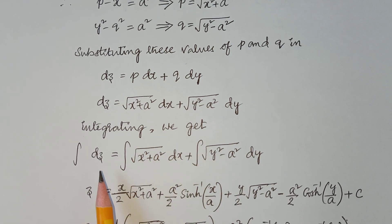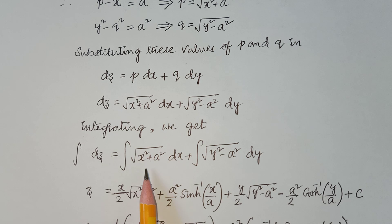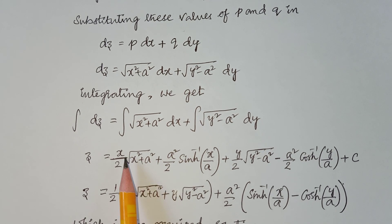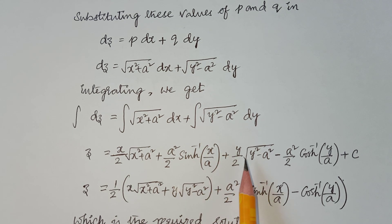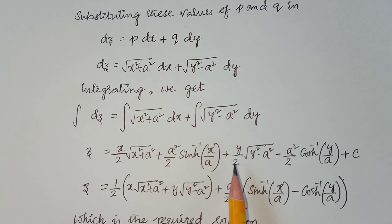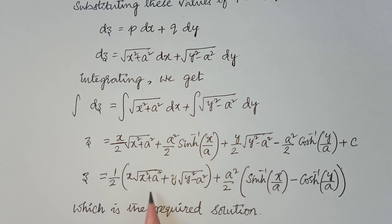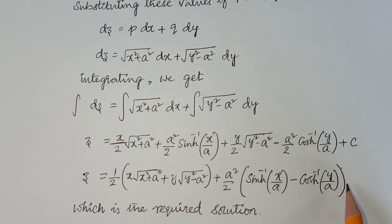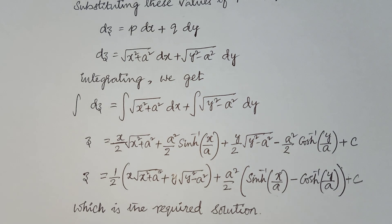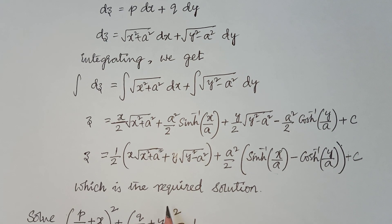Integrating both sides: z = ∫√(x² + a²) dx + ∫√(y² − a²) dy + c. Using standard integral formulas: z = (x/2)√(x² + a²) + (a²/2) sinh⁻¹(x/a) + (y/2)√(y² − a²) − (a²/2) cosh⁻¹(y/a) + c, which is the required solution of the given problem.